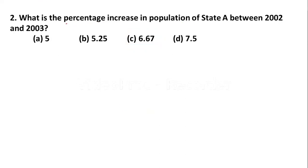Question 2: What is the percentage increase in population of State A between 2002 and 2003? Options: A: 5, B: 5.25, C: 6.67, D: 7.5.